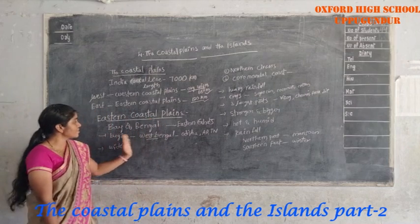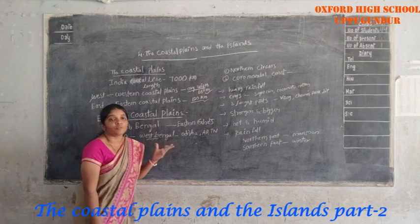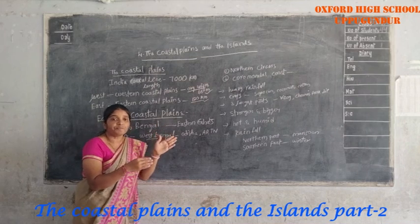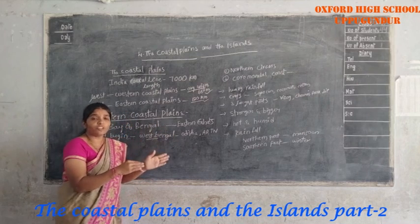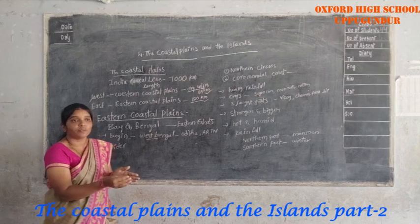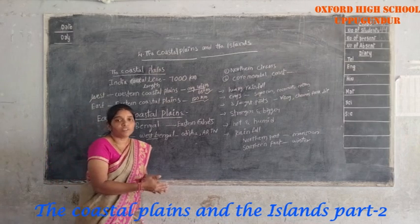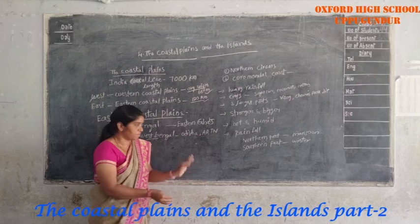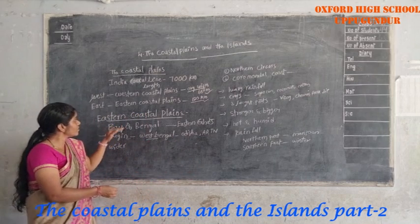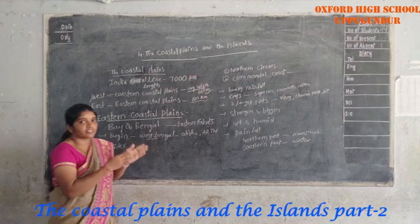The Eastern Coastal Plains begin in West Bengal and extend through Odisha, Andhra Pradesh, Tamil Nadu, up to Kanyakumari in the south of India. This is the stretch of the Eastern Coastal Plains.